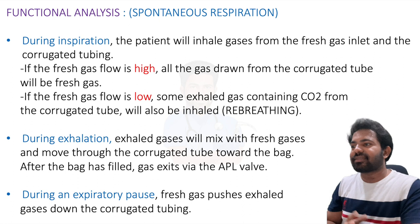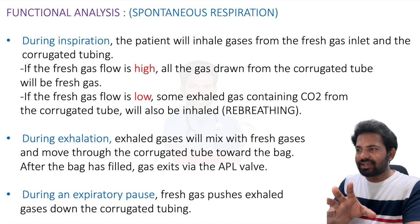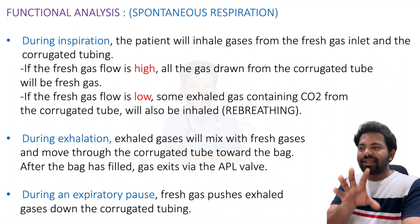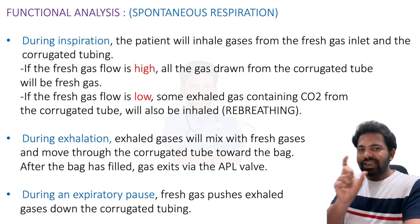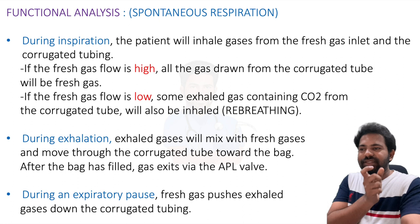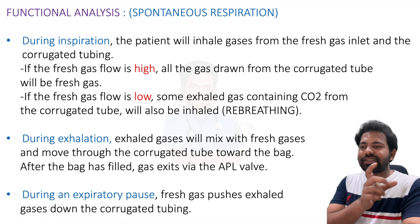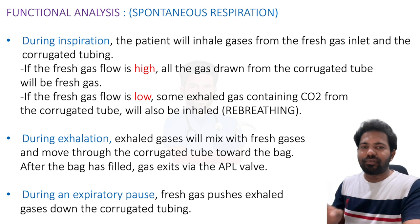During exhalation, the exhaled gases mix with fresh gases and move through the corrugated tubes toward the reservoir bag. After the bag has filled, gas exits via the APL valve. During the expiratory pause — since each expiration is not immediately followed by an inspiration — the fresh gas pushes the exhaled gases down the corrugated tubing and through the APL valve to the outside.